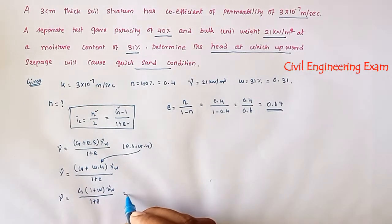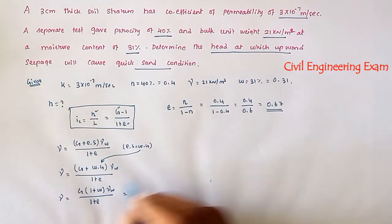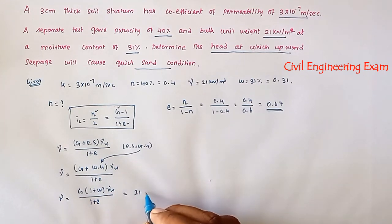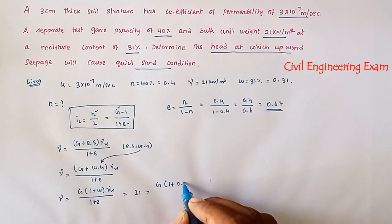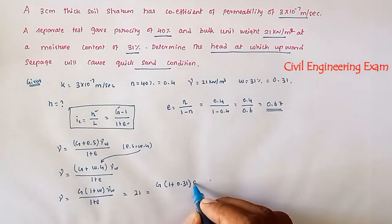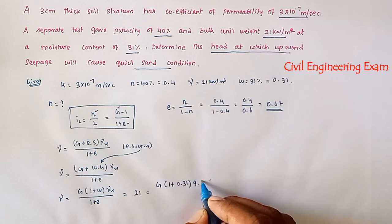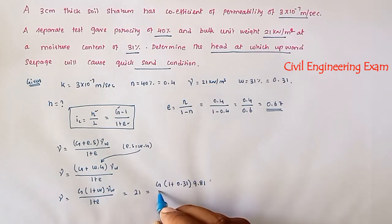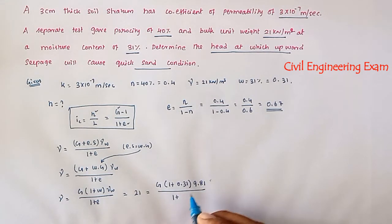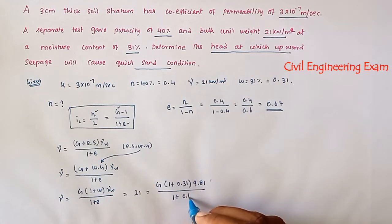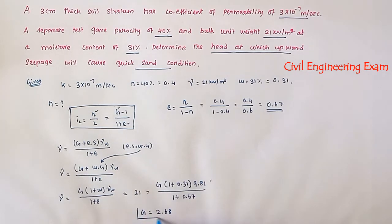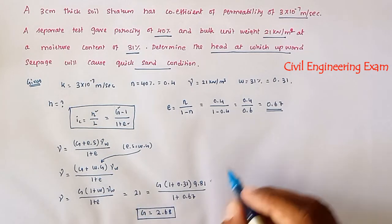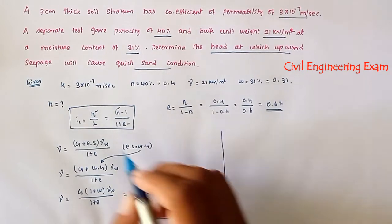Substituting the values: 21 = G × (1 + 0.31) × 9.81 / (1 + 0.67). Solving this equation gives G = 2.68.